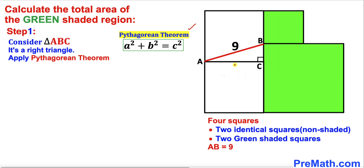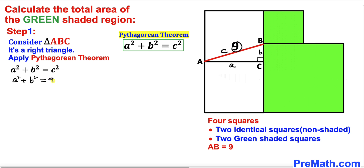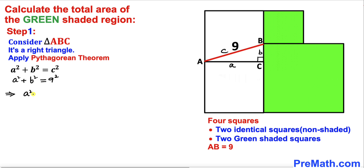Let me call this side A, this side B, and this hypotenuse C. Therefore, let's fill in the blanks. In our case A squared plus B squared are the same, and C is nine units, so this becomes nine squared. Therefore our A squared plus B squared turns out to be nine squared, which equals 81.